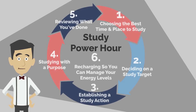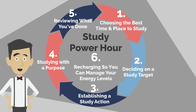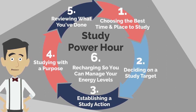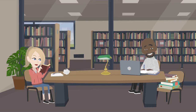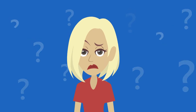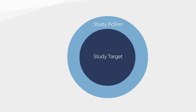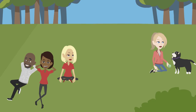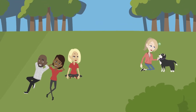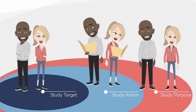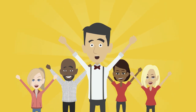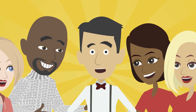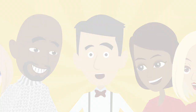In this video, we covered six different aspects of the study power hour and how to evaluate your study effort: choosing the best time and place to study, deciding on a study target, establishing a study action, studying with a purpose, reviewing what you've done, and recharging so that you can manage your energy levels and evaluate your study effort. Now that you know more about the study power hour and how to evaluate your study effort, you should be better prepared to teach them in your courses. Good luck!